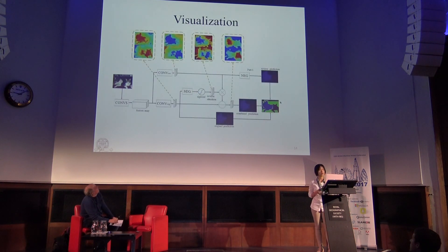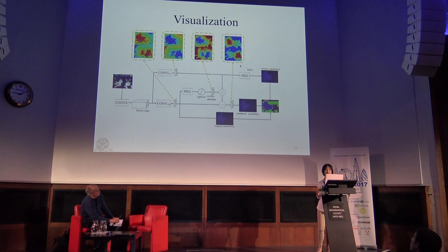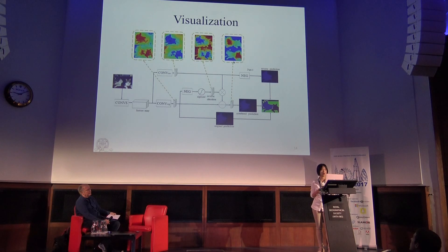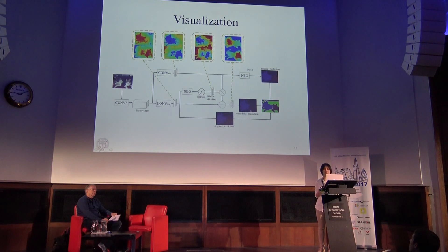Here are some visualizations of the final response for our network categories. Comparing the original response with the combined response, at the region where confusion is likely to happen, both responses for both categories are suppressed, but we find the separation for the cat is greater. This means we can get more pixels correctly classified.